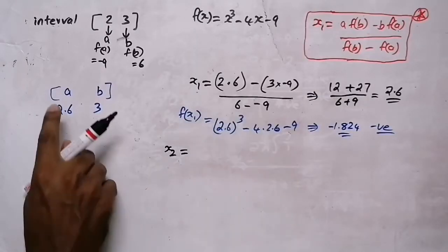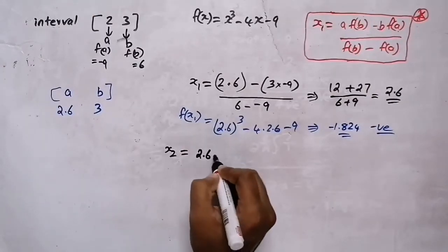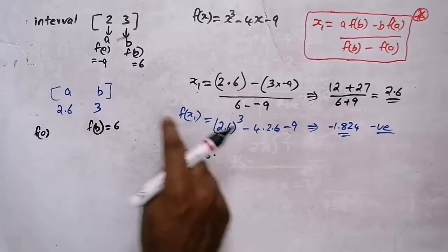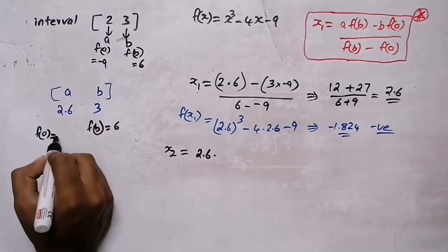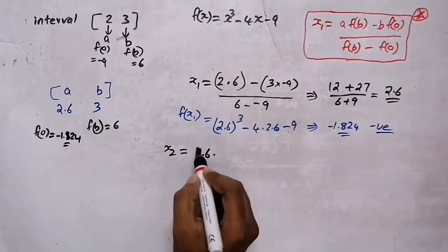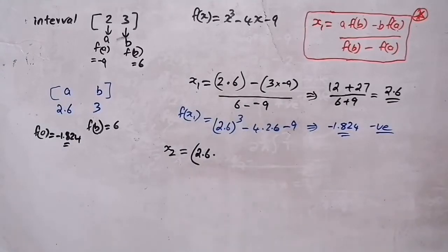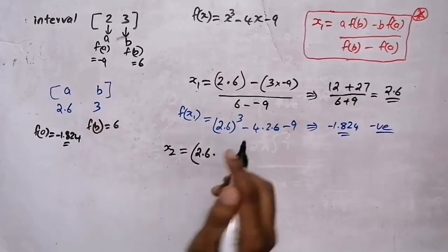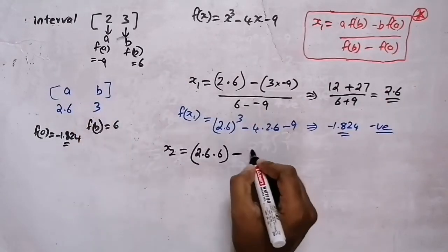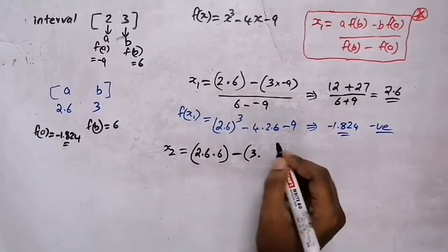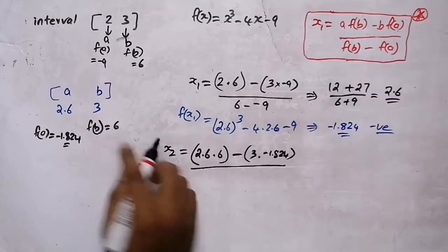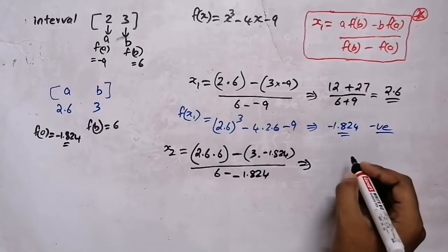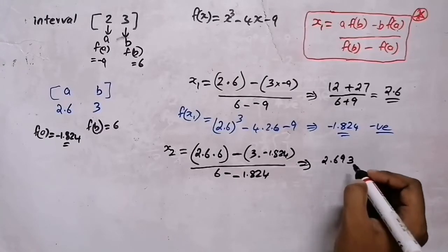If f(x1) had been positive, we would have replaced b, but since it is negative we replace a. Now we find x2 with the new interval: a = 2.6, f(b) = 6, b = 3, f(a) = −1.824. Substituting into the formula gives x2 = 2.693.